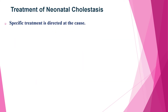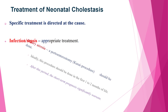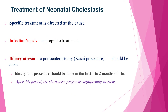Regarding treatment of neonatal cholestasis, specific treatment is directed at the cause. If the cause is infectious or sepsis, appropriate management is needed. If the cause is biliary atresia, a portoenterostomy or Kasai procedure should be done, ideally during the first one to two months of life, as the short-term prognosis significantly worsens after this period. If the cause is gestational alloimmune liver disease, IVIG is needed.